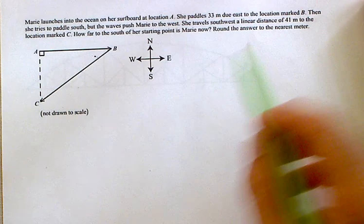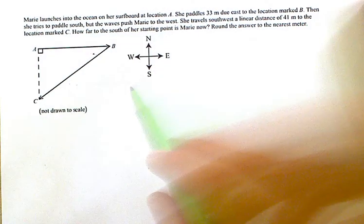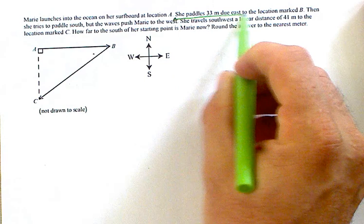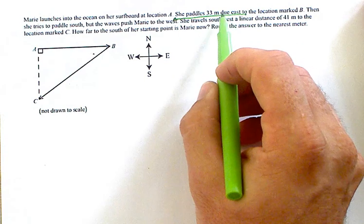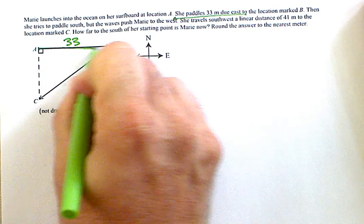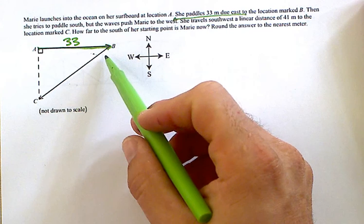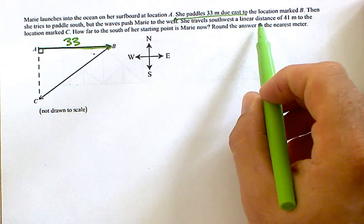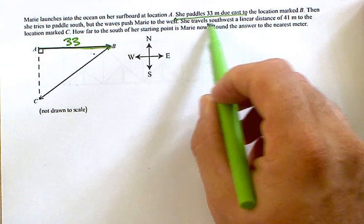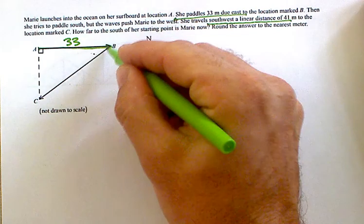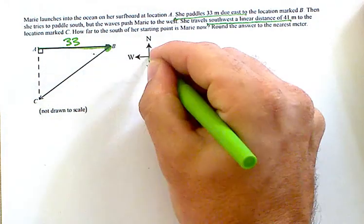This is a very typical question here. Simple though. You got to use the directions and they give that to you. So she's paddling 33 meters due east. So that's this direction. Right away I know it's giving me one of my legs in my right triangle. Then she tries to paddle south, but then it says it pushes her southwest a distance of 41 meters. So she went from here, southwest is that direction. When you say southwest, you're combining south and west and you're going this direction of 41.